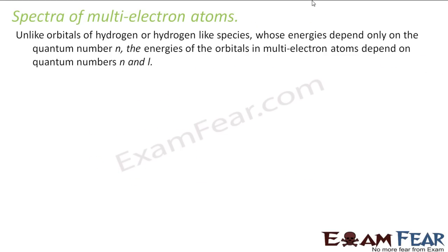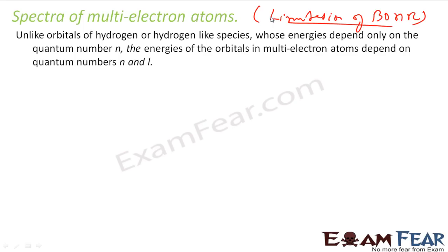As I mentioned, Bohr's theory limitation was that it could not explain the spectra of multi-electron atoms. In hydrogen or hydrogen-like species, energy depends only on one quantum number n, so you can explain the spectra. But for multi-electron atoms, it depends on other quantum numbers also — n, l, and ml — and that is the reason Bohr could not explain the spectra of multi-electron atoms.